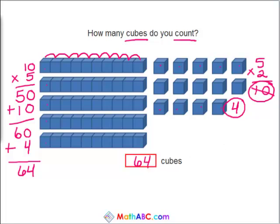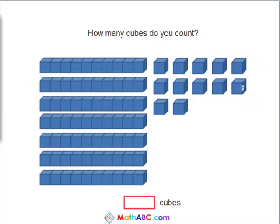Let's try another one. Now how many blue cubes do you count? Well we know there are 10 in each of the rows. So 10 times 1, 2, 3, 4, 5, 6, 7. 10 times 7 is 70.